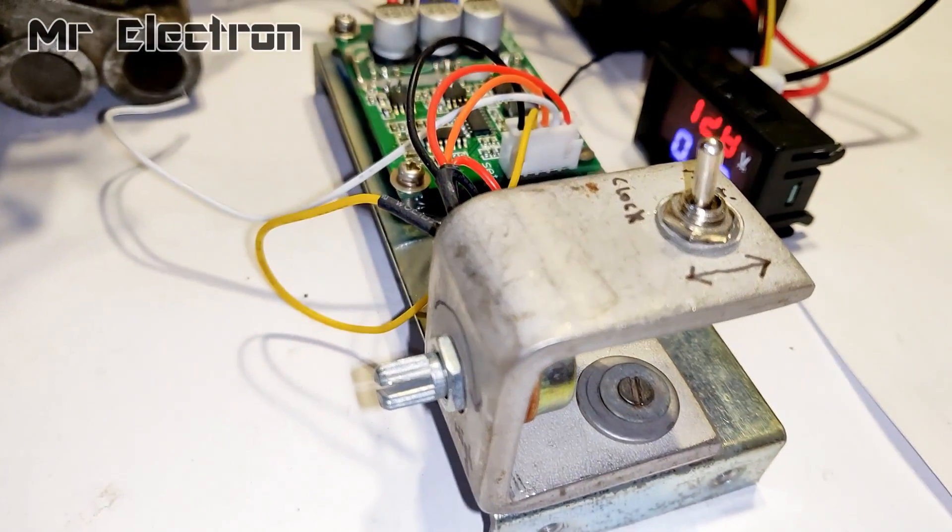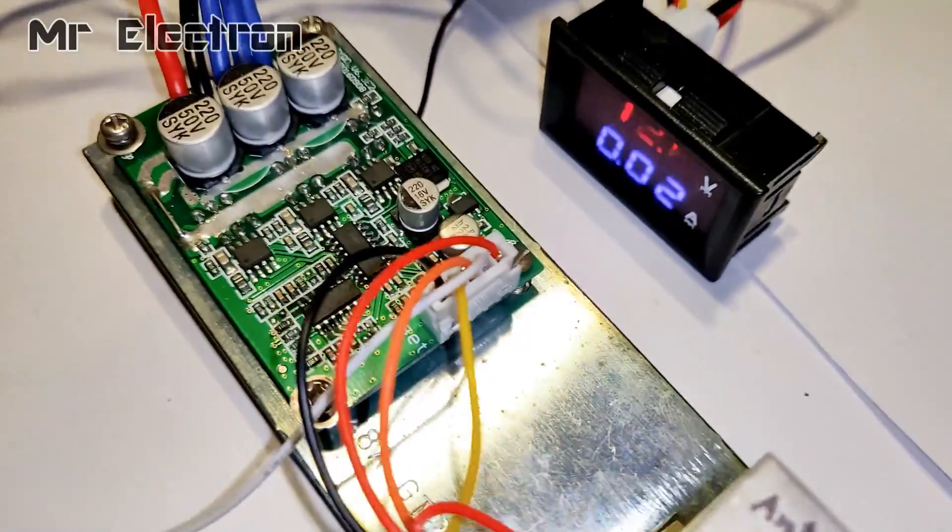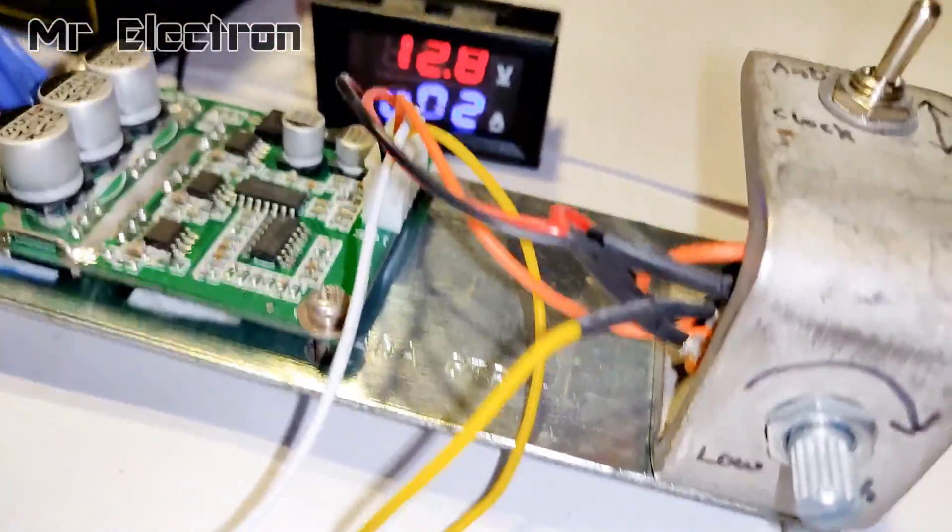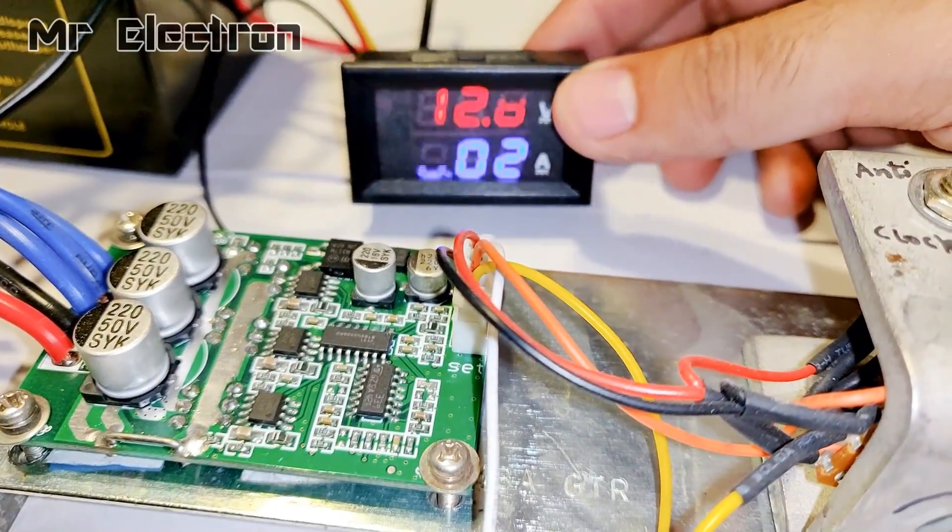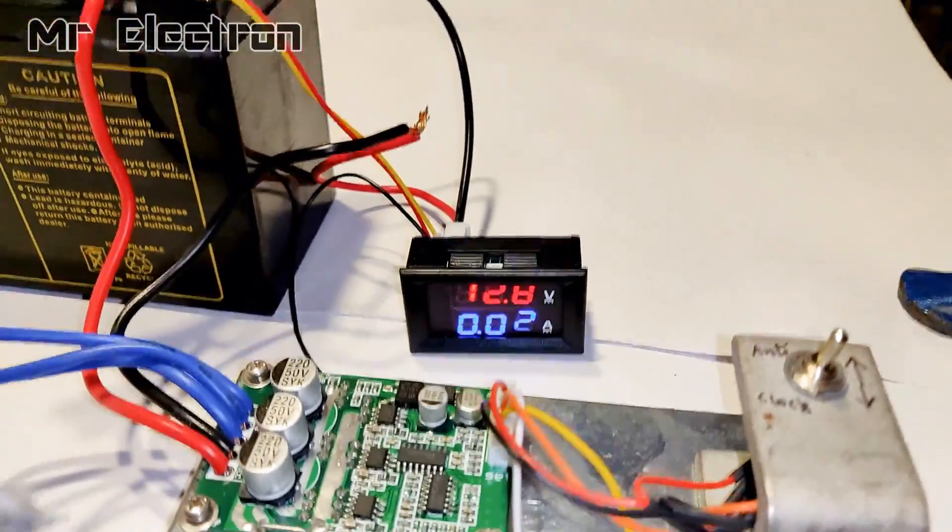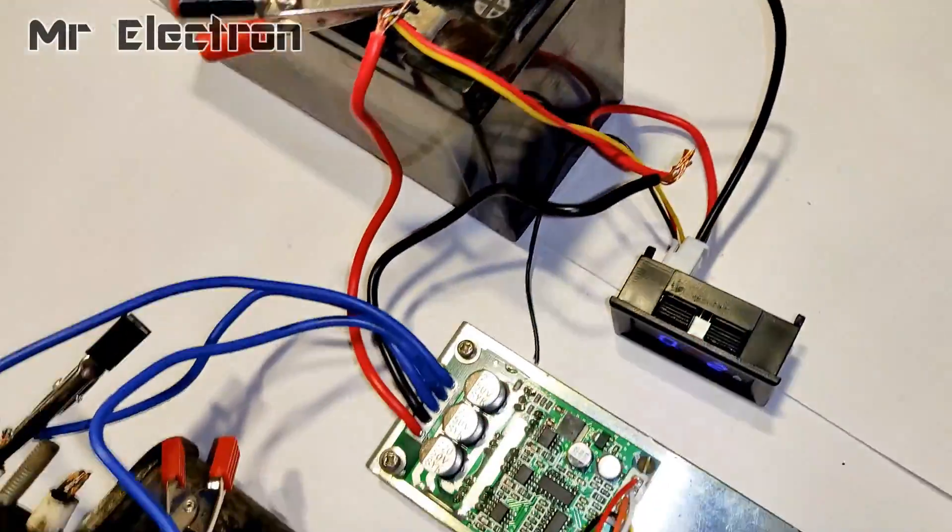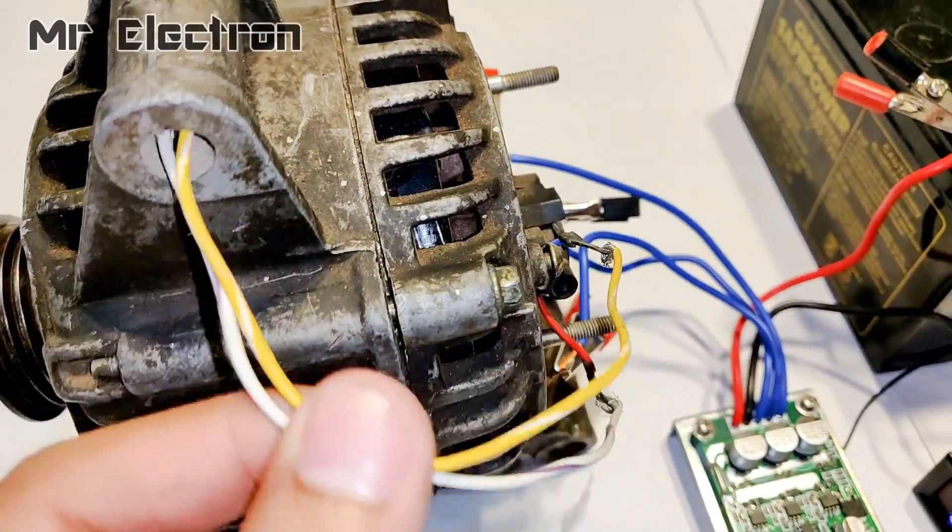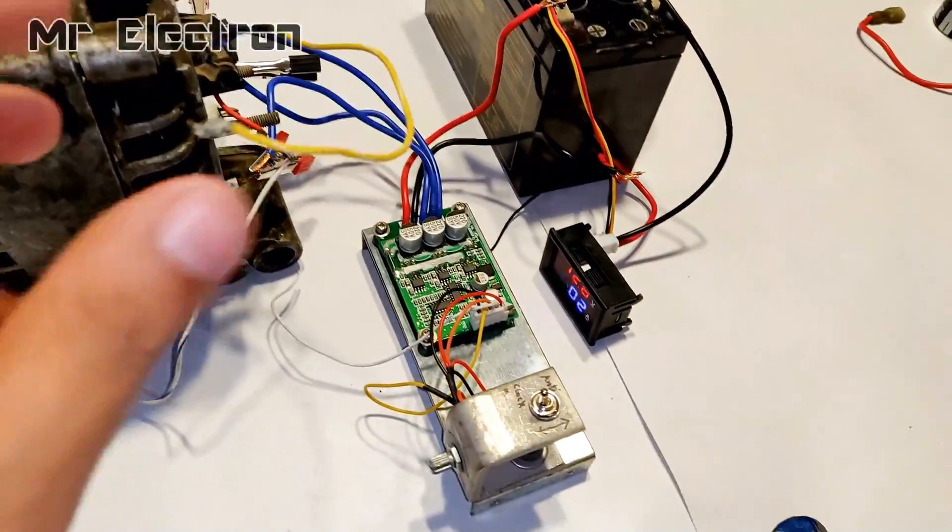As you can see, the armature of the alternator has been connected to the controller and the meter is measuring the power being consumed at no load. So it is around 13 volts and 0.02 amps. It is very less power for activating the controller and the power being consumed by the meter itself. Note that I have not connected any external power source to the field winding of the alternator.